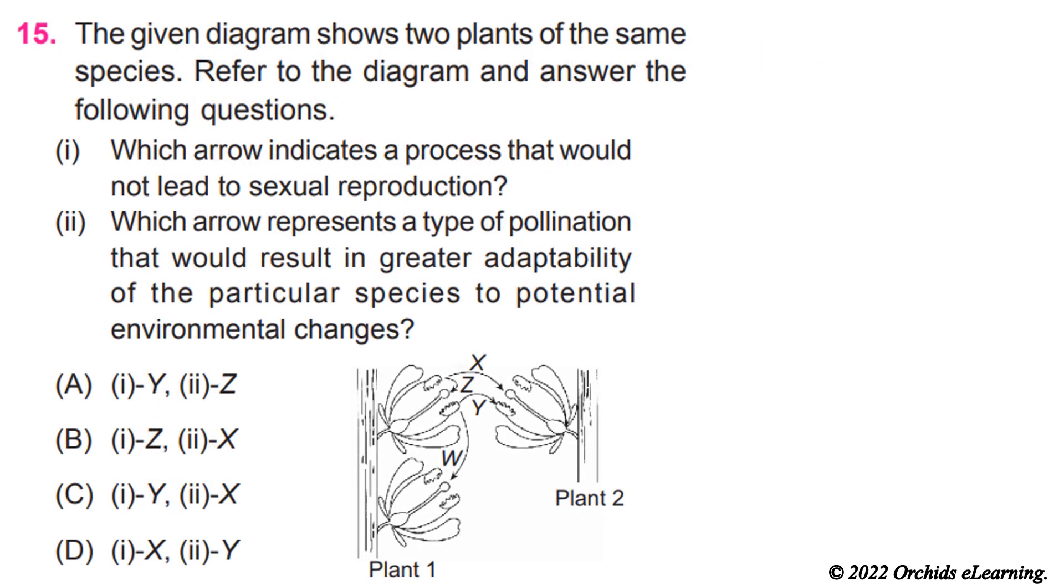The given diagram shows two plants of the same species. Refer to the diagram and answer the following questions. 1. Which arrow indicates a process that would not lead to sexual reproduction? 2. Which arrow represents a type of pollination that would result in greater adaptability of the particular species to potential environmental changes?